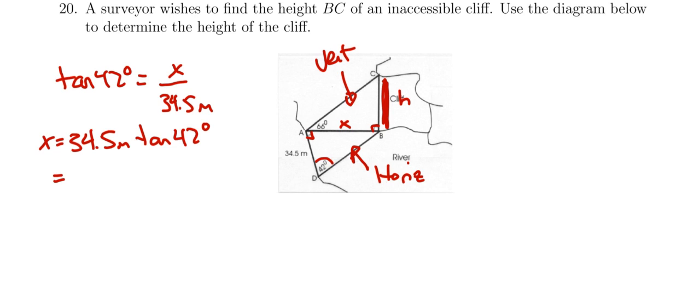I'll just do this on my calculator: 34.5 tangent of 42 is going to be approximately 31.1 meters, and I'll use the actual value in my calculator here in just a second.